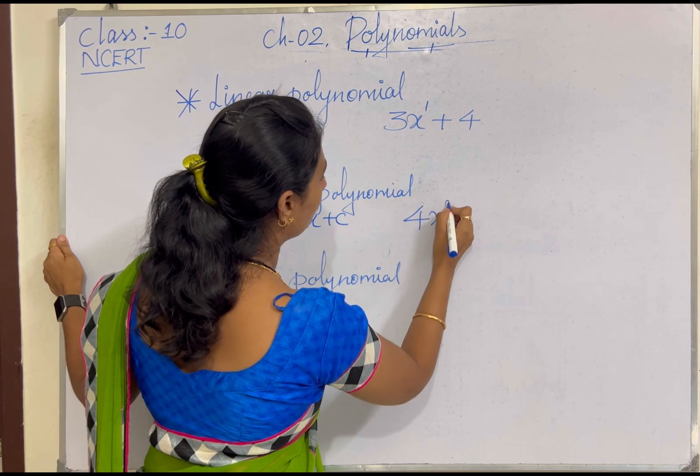Based on the degree, polynomial expressions are classified as: linear polynomial — general form ax + b, degree 1; quadratic polynomial — general form ax² + bx + c, degree 2; cubic polynomial — general form ax³ + bx² + cx + d, degree 3. In Chapter 2, we are going to discuss quadratic polynomials in detail, including how to factorize them and the relationship between the zeros of the polynomial and their coefficients.